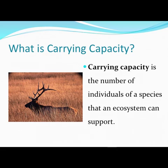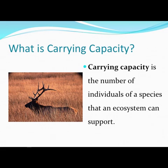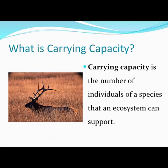Carrying capacity is the number of individuals of a species that an ecosystem can support. Most of the time a population stays below carrying capacity, because reaching it can actually damage the environment and reduce that capacity. A good example is elk or white-tailed deer in Wisconsin — if their numbers get too large, they overbrowse the available winter food, eating the buds and nubs of branches that would become future food sources. Too many individuals cut back the environment's ability to produce new food, and the carrying capacity can drop for four or five years before plant growth recovers.